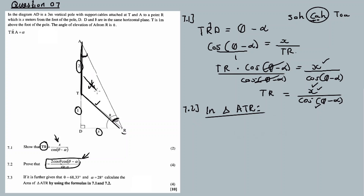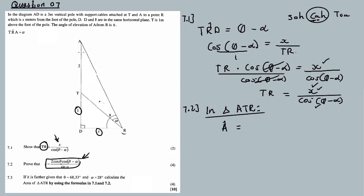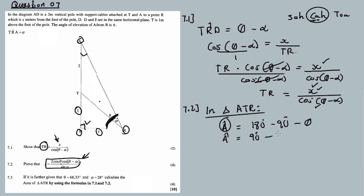Using the sine rule in triangle ATR: TA divided by sine alpha equals TR divided by the sine of its opposite angle. The opposite angle to TR is angle A, which is 90 minus theta. So: TA over sine alpha equals TR over sine(90 minus theta). Now sine(90 minus theta) is a co-function, which equals cosine theta.